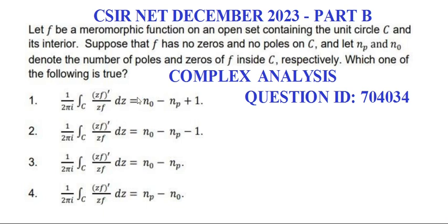This question is based on the argument principle. Let's see the problem. Let f be a meromorphic function on an open set containing the unit circle C and its interior. Suppose that f has no zeros and no poles on C, and let N_p and N_0 denote the number of poles and zeros of f inside C, respectively. Which of the following is true?